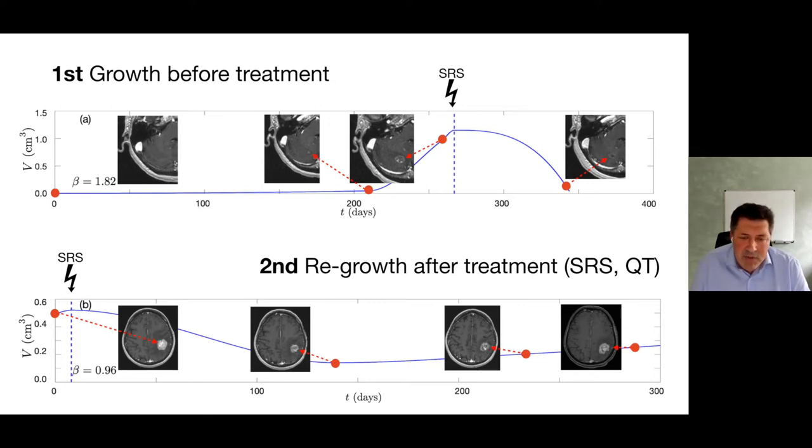There you have another example. This is regrowth after treatment. You have radiation therapy, radiosurgery. First there's decrease in tumor size, and then regrowth. When you compute the exponent upon regrowth, you get 0.96. So this is smaller than 1 or around 1 in this case.